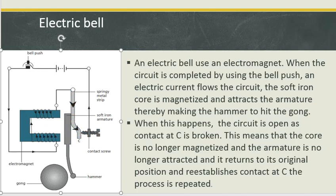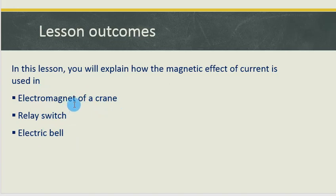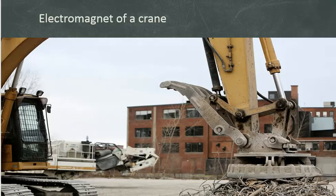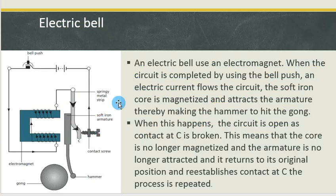This is how the magnetic effect of an electric current can be applied. In this lesson, we looked at how it is used in an electromagnet of a crane, in a relay switch, and in an electric bell. In all three cases, there is an electromagnet. In the crane, electricity is used to separate magnetic materials from non-magnetic materials. In a relay switch, there is an electromagnet. In an electric bell, there is an electromagnet. We also looked at a reed switch, which is some kind of a relay switch.